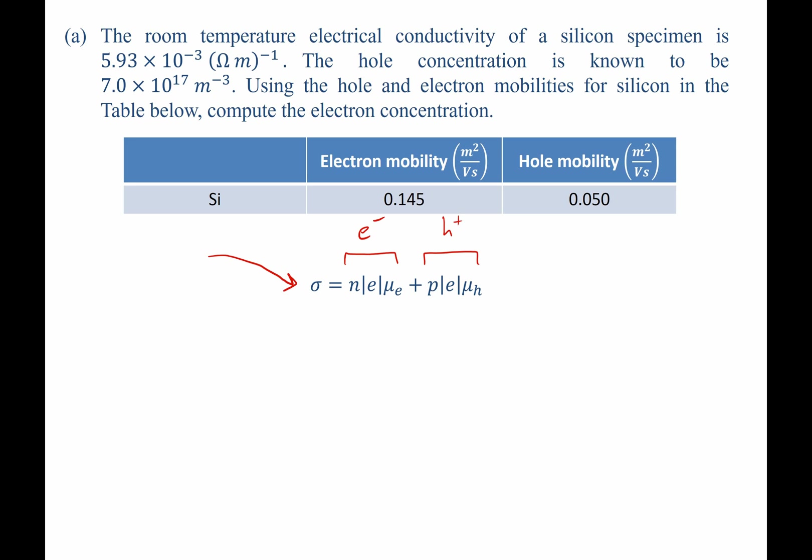Now let's take a look at the units. The conductivity has units of inverse ohmmeters, which is 1 over ohms times meters. Therefore, each one of these terms should give us the same thing, 1 over ohmmeters.